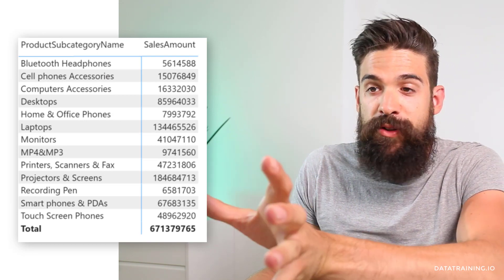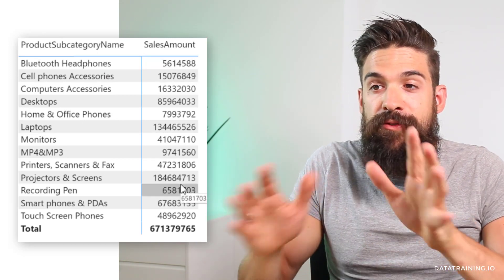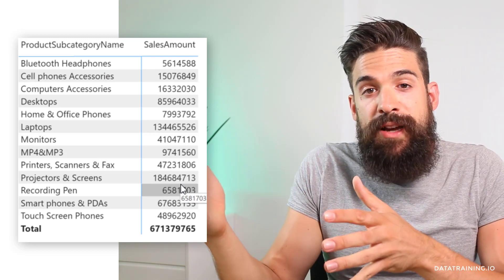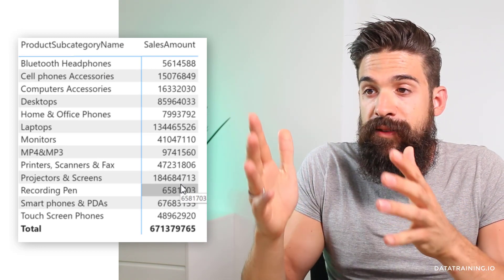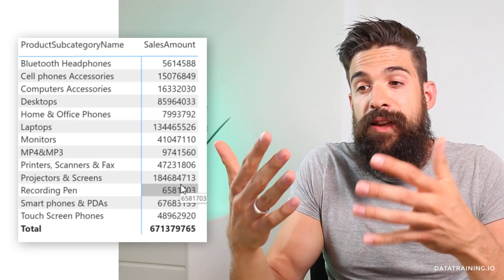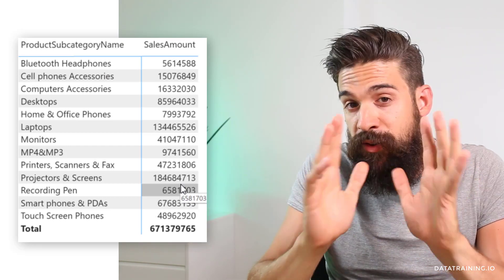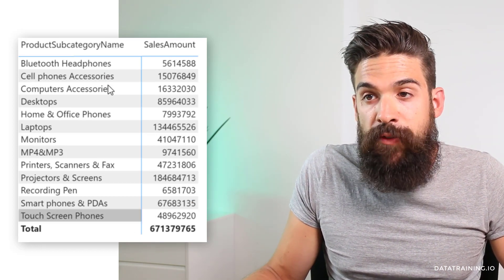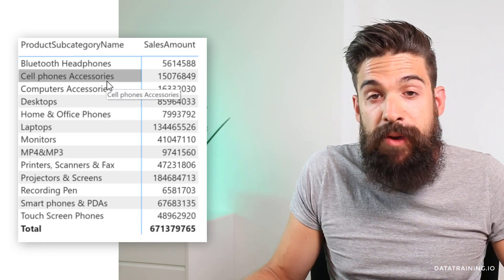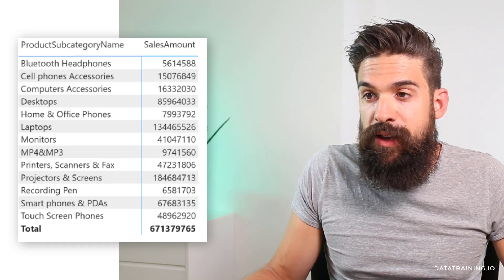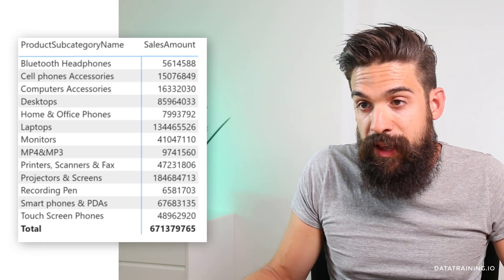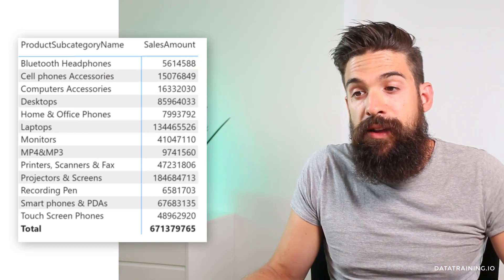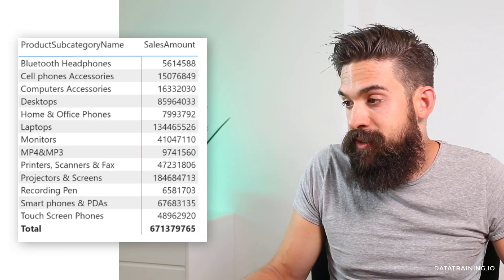Here we have a small table showing the sales amount for different subcategories. I'm going to add a new measure where I calculate the sales amount as a percentage of the grand total. To do this, I first need to remove the filter context on subcategory name, which I can do with the ALL function, to get the grand total for each subcategory. Then I can divide the sales amount by the overall grand total.